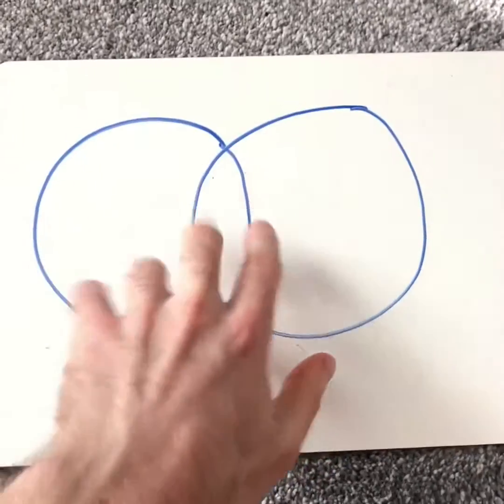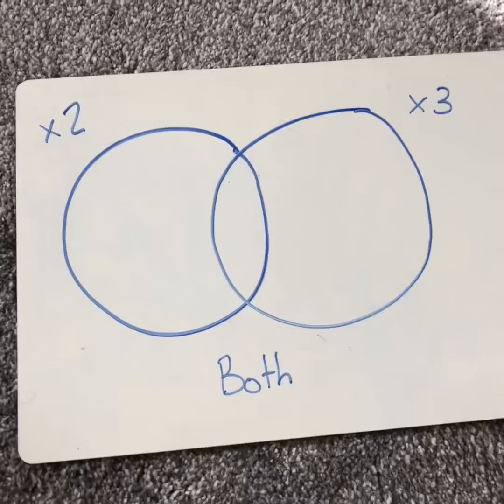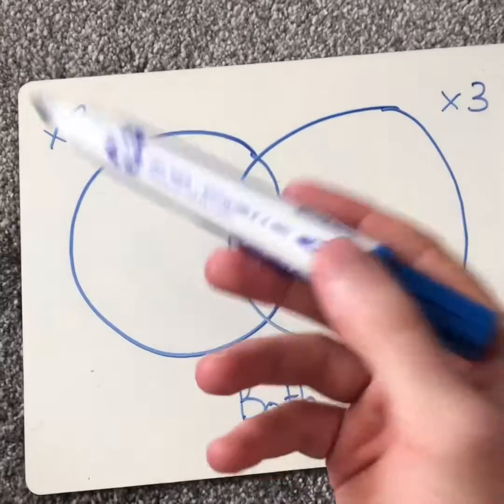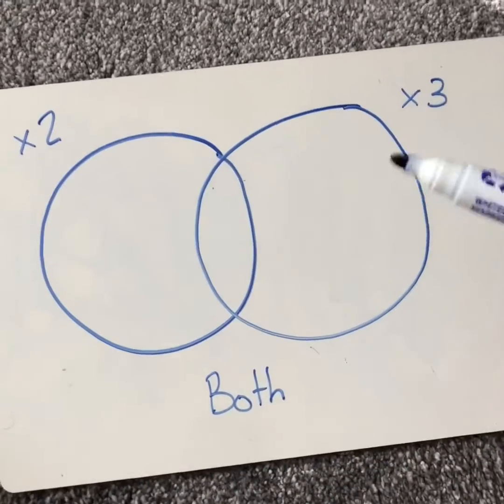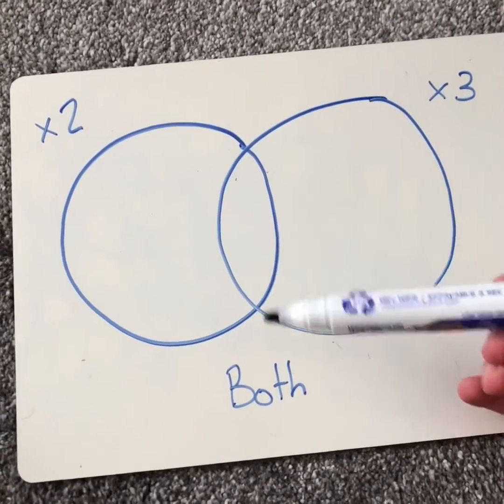So a basic Venn Diagram has two circles that overlap. I could say this circle represents the two times table, this one represents the three times table, and the bit in the middle, well, that's both.